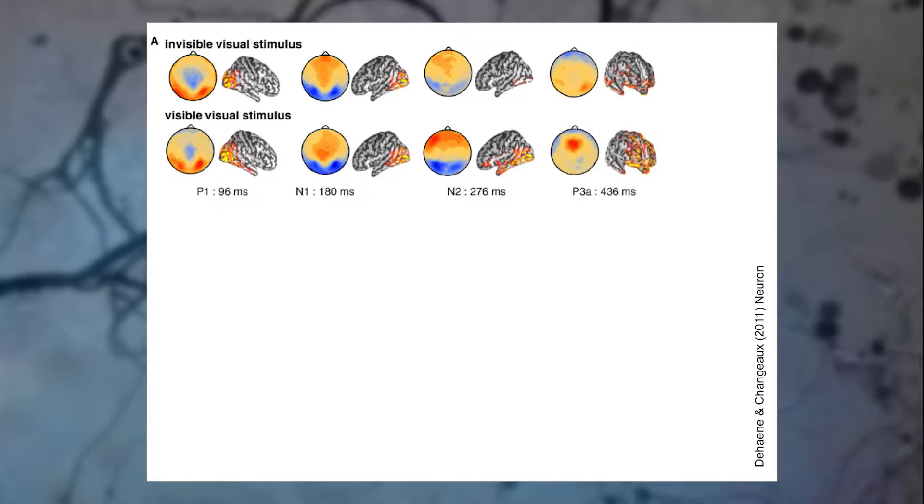After 400 milliseconds from target onset, we can see a vast difference between the two cases. When the stimulus did not make it into consciousness, cortical activity has already begun to subside. Whereas in the case where the stimulus made it into consciousness, the frontal lobes appear to light up with activity. This activity is associated with the P3A signal, which is associated with stimulus-driven non-volitional attention. After half a second, in the case that is consciously seen, we see even more frontal activation and reactivation of the occipital cortex. This activation is associated with the P3B signal, which is associated with volitional attention.